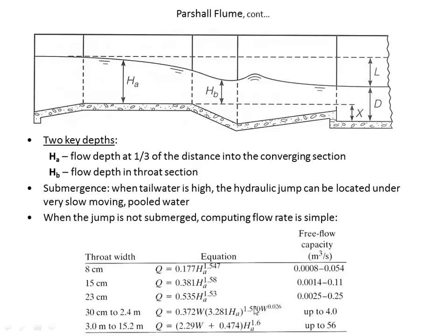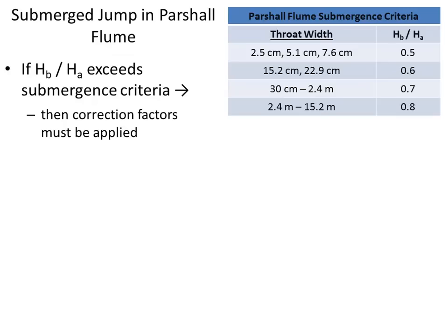All the flow equations use h_a. The reason we also measure depth in the throat is to check whether the downstream water depth submerges the hydraulic jump that forms inside the throat. If the tailwater depth is too high and submerges that hydraulic jump, it reduces the flume's capacity. So we do a check to see whether the hydraulic jump is submerged — if it is, we must adjust the flow rate equations. There is free flow through the flume, and submerged flow where the hydraulic jump is submerged.